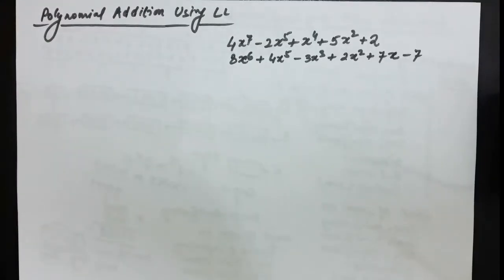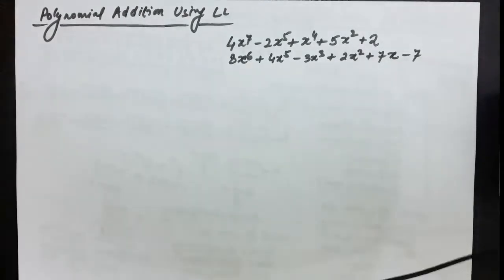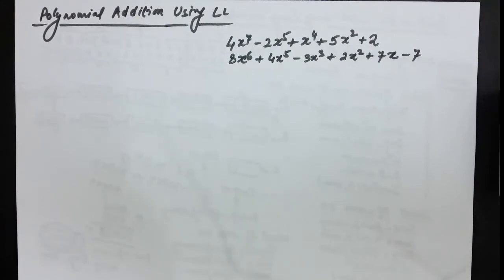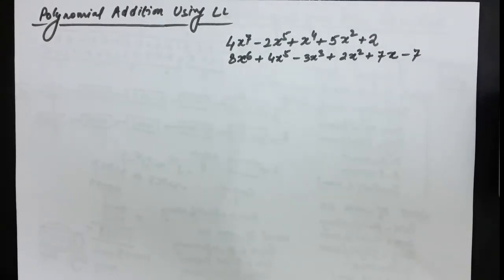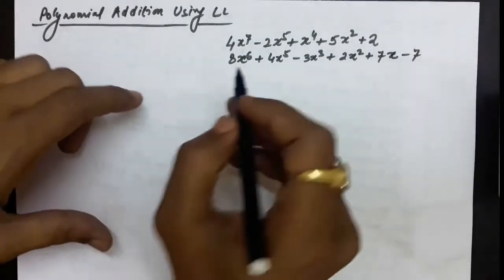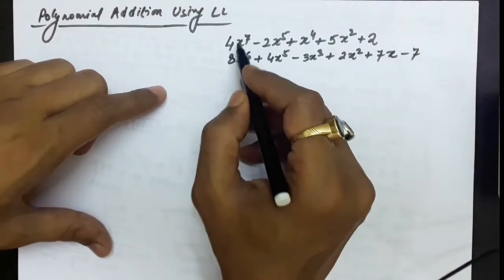Hello everyone. In this lecture we will discuss polynomial addition using linked lists. Suppose we have two polynomials given, and if we have to add these two polynomials, the method of addition would be to find out the exponents of the different terms. If the two exponents are the same, their coefficients are added together.